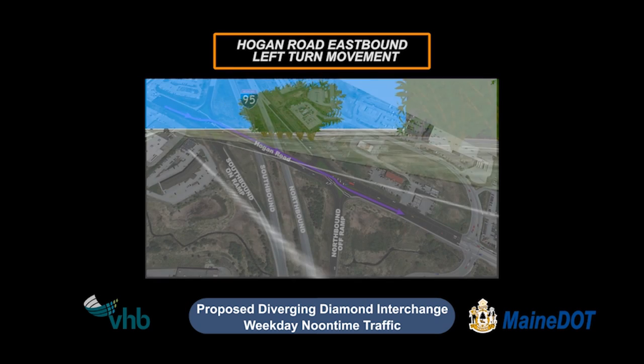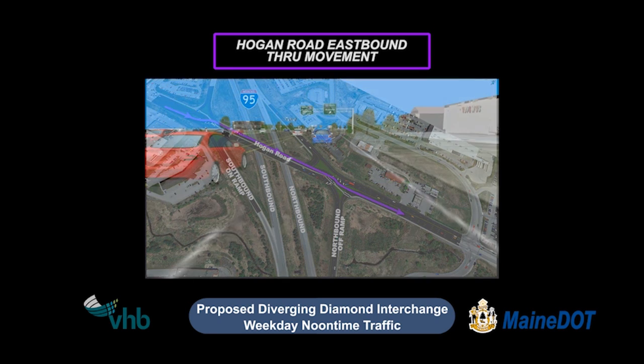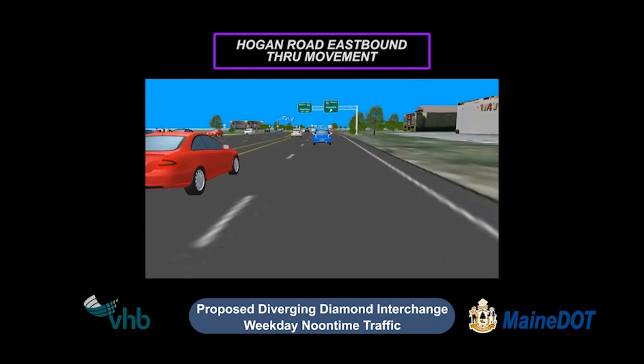Through traffic on Hogan Road is diverted to the left side of the road at the first crossover and back to the right side of the road at the second crossover.